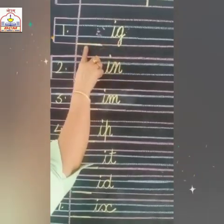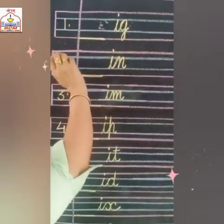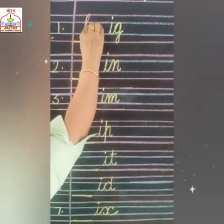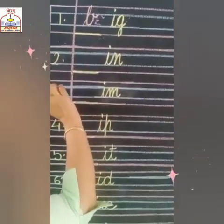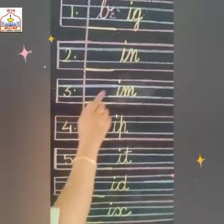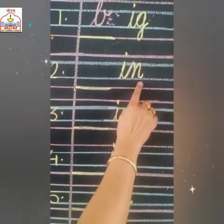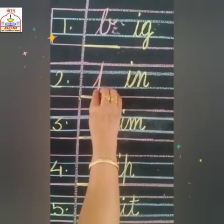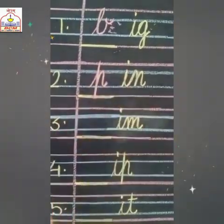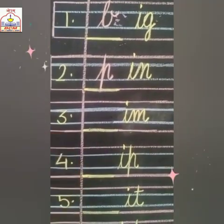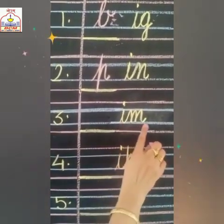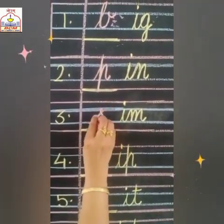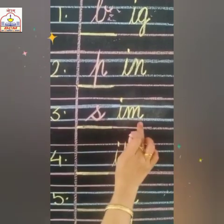Number 1 is I-G, ig. To make it meaningful we will write here B — B-I-G, big. Number 2 is I-N, in. To make it meaningful we will write here P — P-I-N, pin. Number 3 is I-M, im. We will write here S — S-I-M, sim.